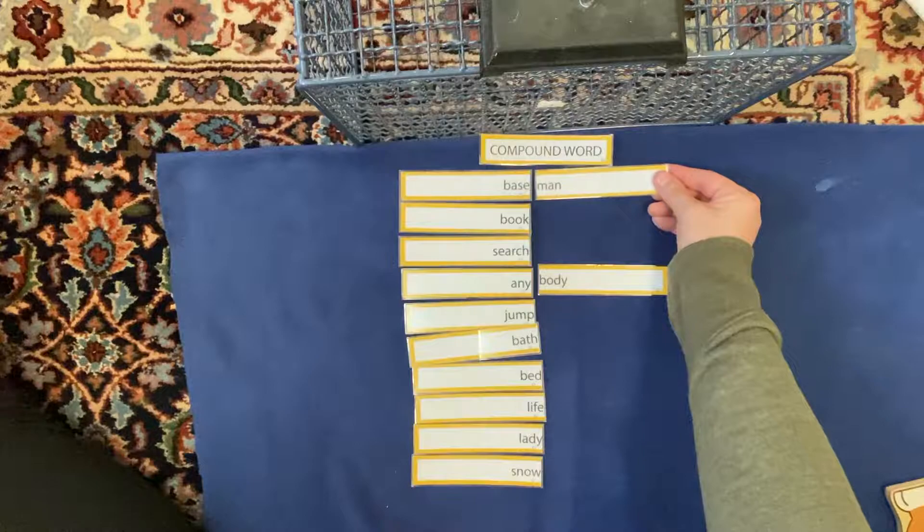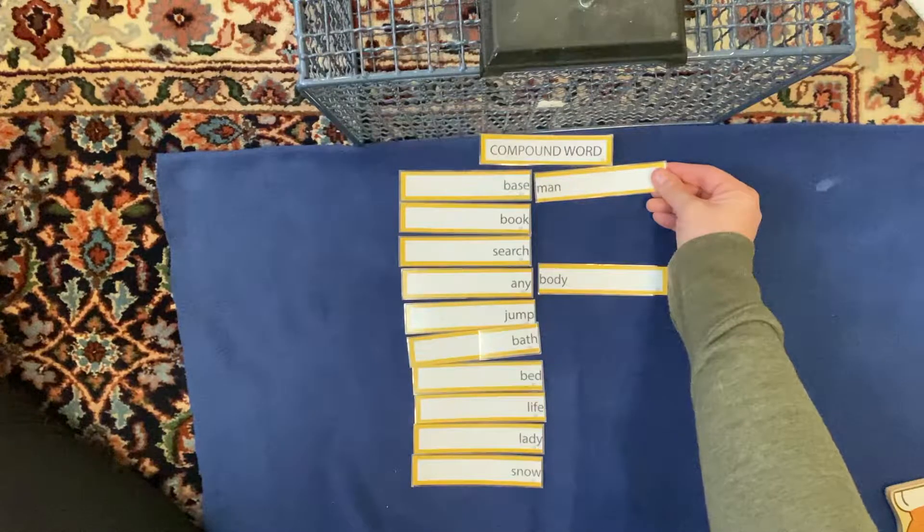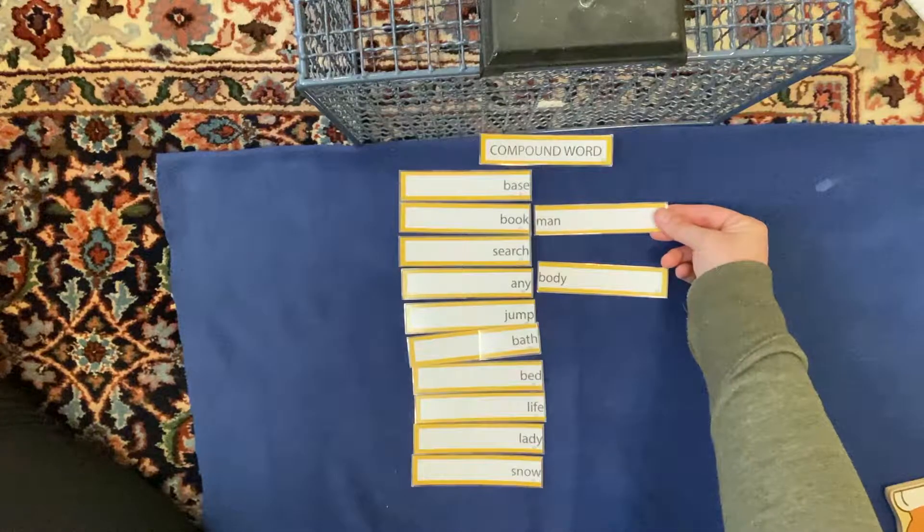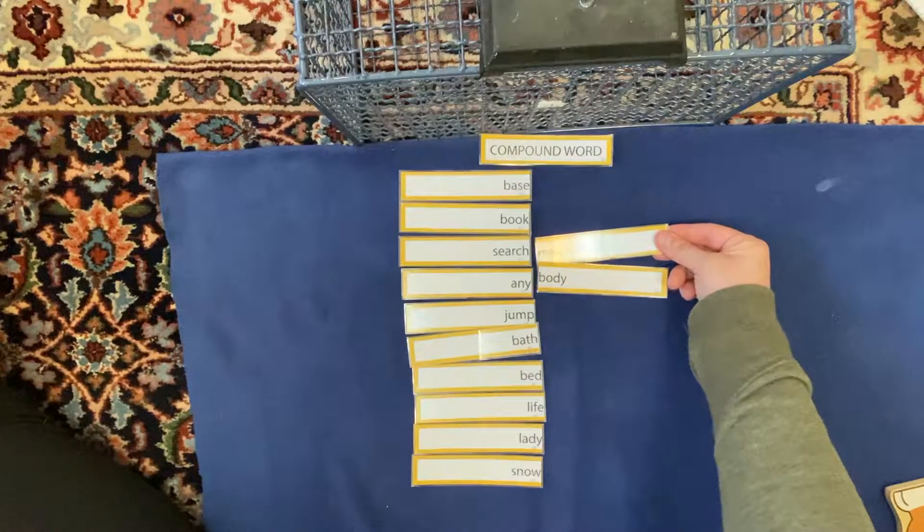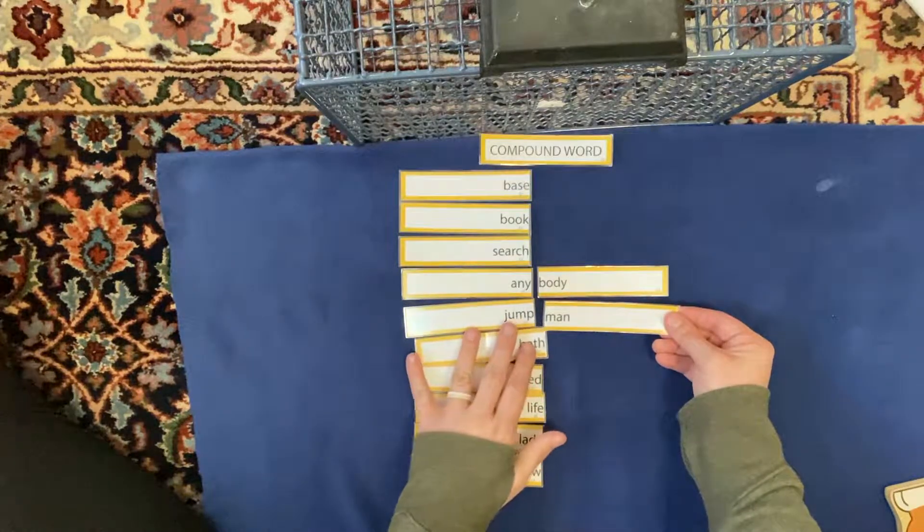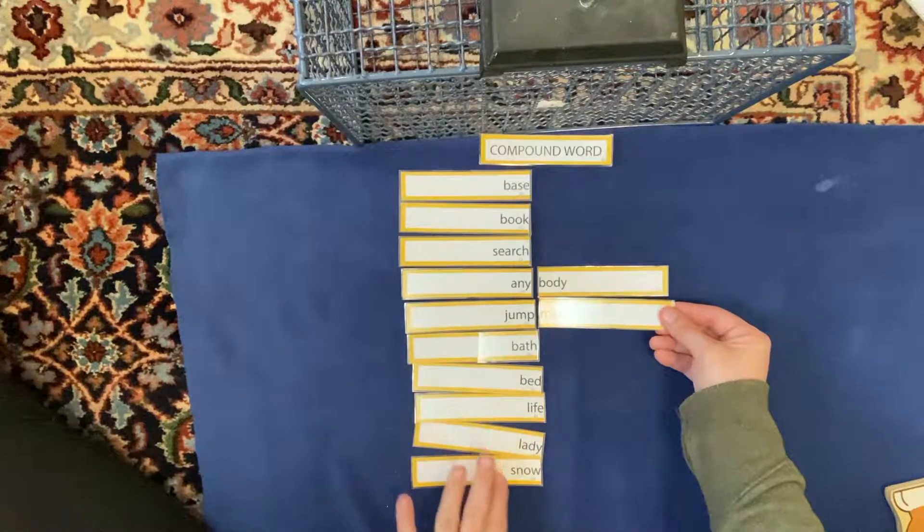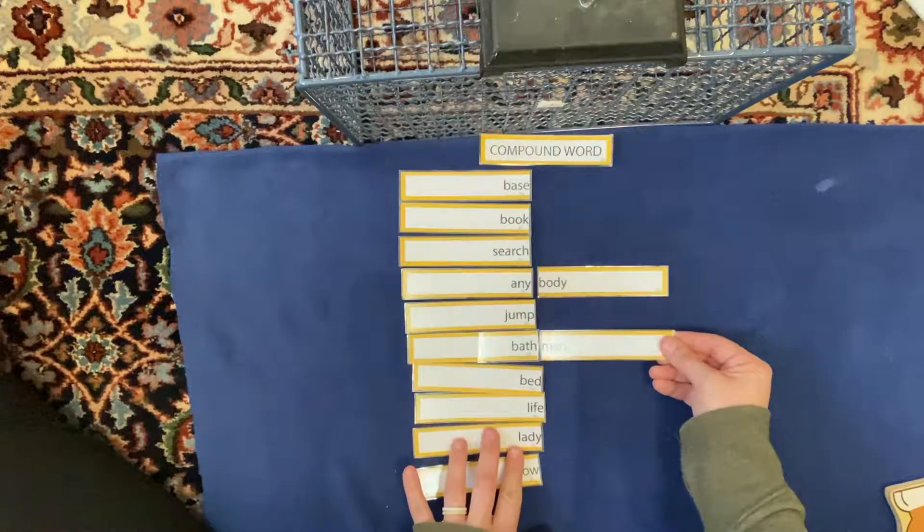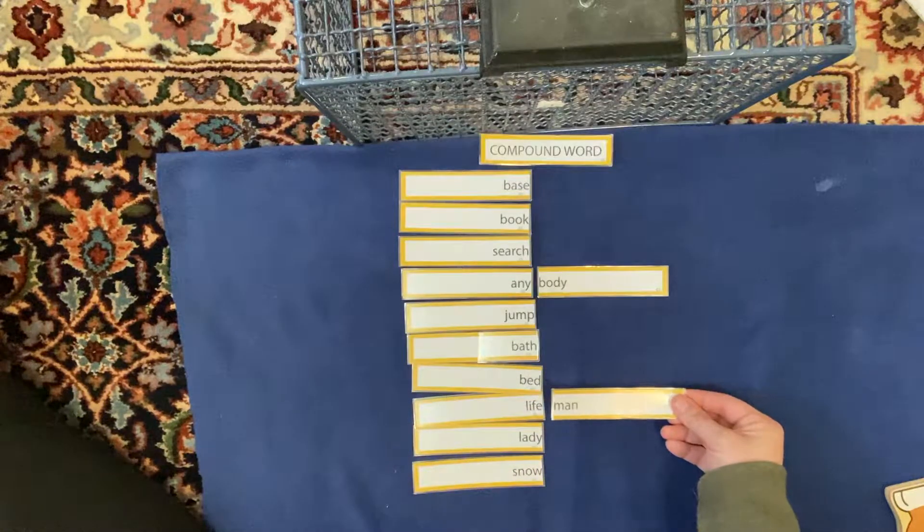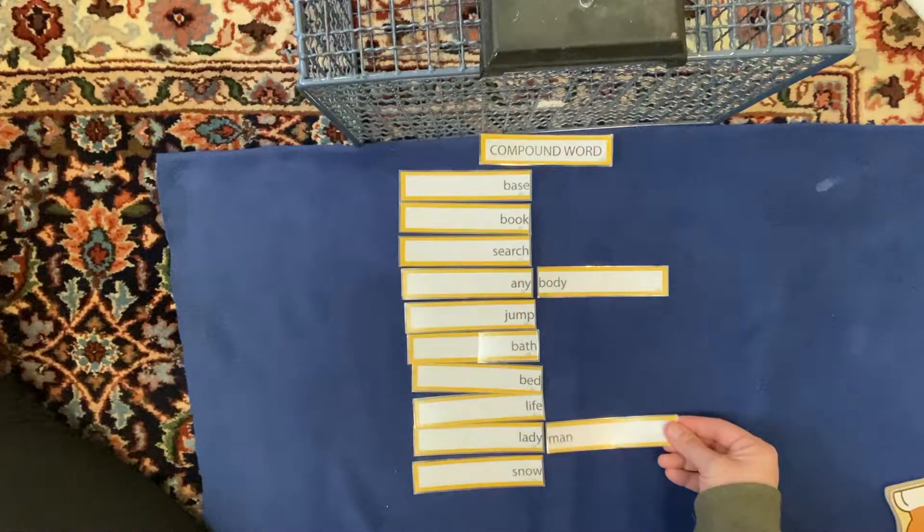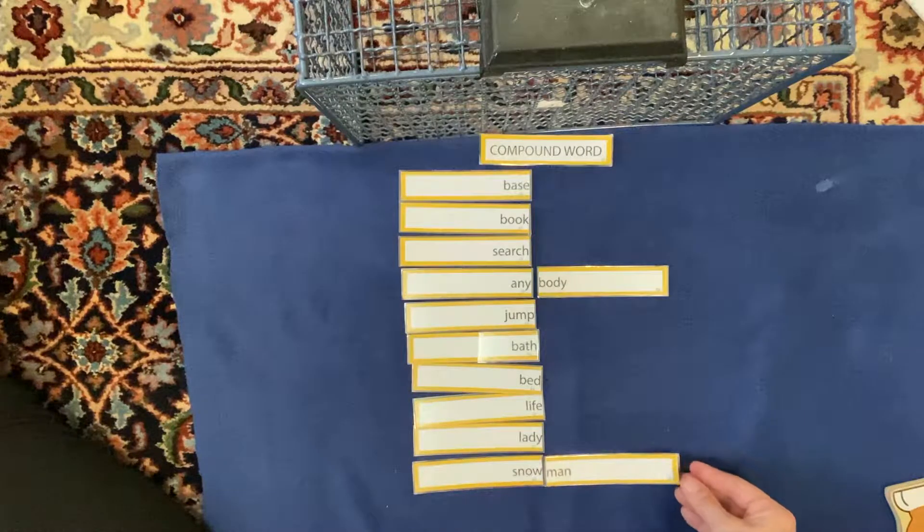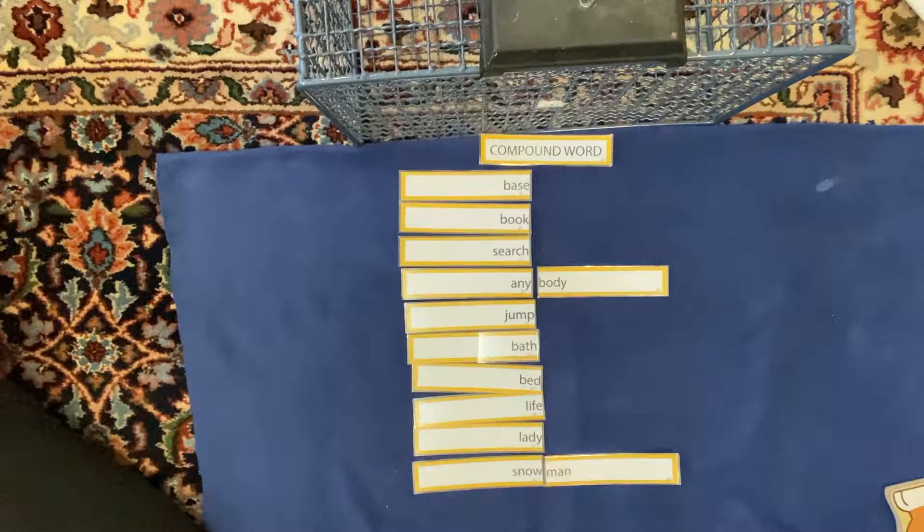Baseman. I mean, technically there is something called a baseman in baseball. So that might work. Book man. I don't know about that one. Search man. No. Jump man. I am sure there is a man that can jump, but this sadly is not a real word. Bath man. Bed man. That'd be weird. Life man. Lady man. Okay. Snow man. Hey, snow man. Okay, I can get down with that one.